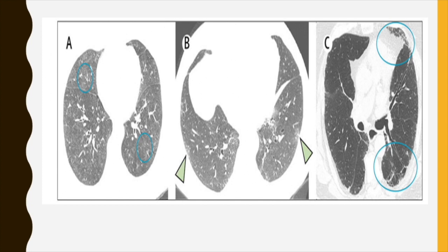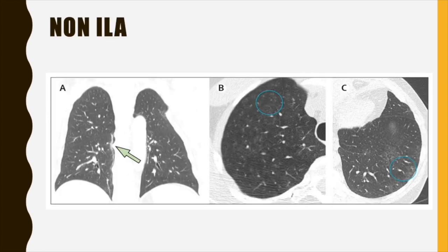The paper provides CT image examples of ILA subcategories. The first is non-subpleural, non-fibrotic ground glass abnormality, central in location. The second is subpleural, non-fibrotic with subpleural ground glass and linear abnormalities but no fibrosis. The third shows traction bronchiectasis and architectural distortion, which may fit into a UIP pattern in the future. There are also examples of non-ILA findings: paraspinal fibrosis, centrilobular nodularity in a heavy smoker, and focal or unilateral abnormalities are not classified as ILA.